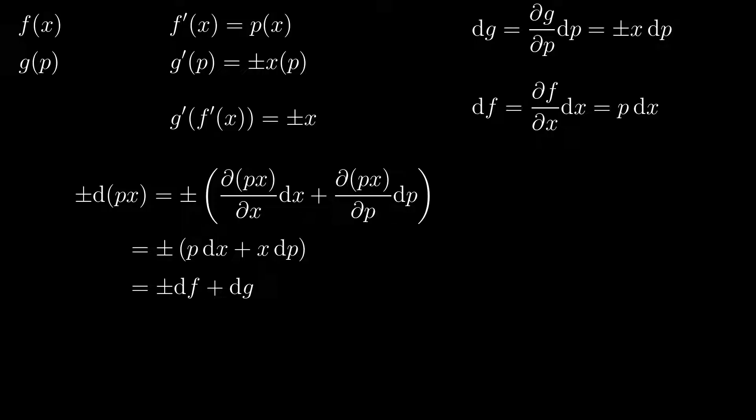Evaluating these partial derivatives gives plus minus p dx plus x dp, which, when compared to the top right equations, gives plus minus df plus dg. We can draw that d to the front, since the total differential is linear, and by comparison, or integration if you will, we obtain that px equals f plus minus g, and that means that g equals plus minus px minus f.